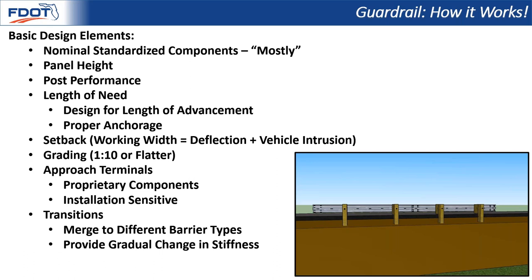Grading is obviously really important. You don't want irregularities in the ground surface approaching the system, or you'll create instability and changes in momentum in the vehicle that won't allow it to engage the guardrail properly and be redirected smoothly. Approach terminals are another critical element. Guardrail works great as a length-of-need system, but on the ends you've got to make those crash worthy and ensure you don't have vehicle compartment intrusions. When you get to approach terminals, you step away from nominal standardized components and get into proprietary components and systems that can be somewhat installation-sensitive. You have to be very mindful to install those systems exactly as the manufacturers provide in their installation manuals and not deviate from post types, as that can have a pretty dramatic impact on performance.